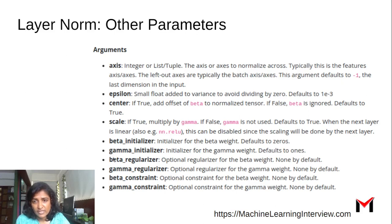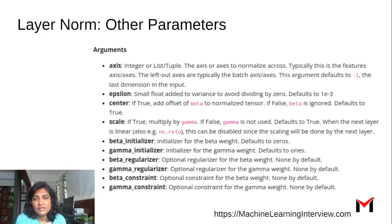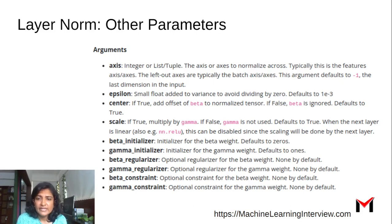Similar to batch norm, layer norm also has beta and gamma parameters which can be learned. Once you normalize, you typically multiply by gamma and add beta, performing a scaling and translation operation in order to have some control over how much normalization is applied. These parameters, beta and gamma, are typically learned as part of the learning process.